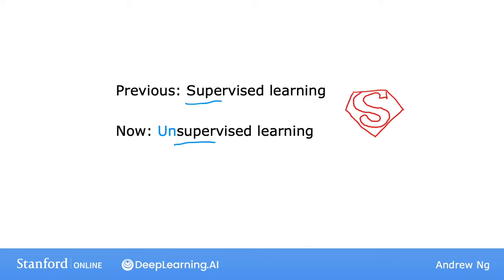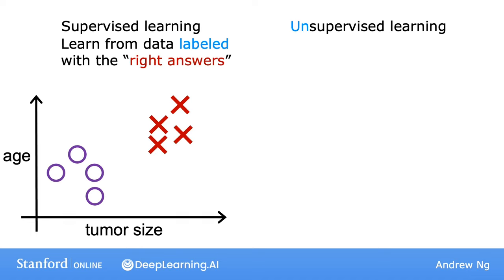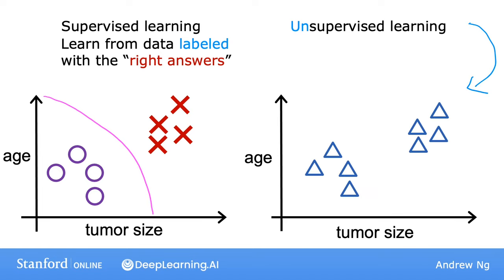When we looked at supervised learning in the last video, recall that it looks something like this. In the case of a classification problem, each example was associated with an output label Y, such as benign or malignant, designated by the O's and crosses. In unsupervised learning, we're given data that isn't associated with any output labels Y.